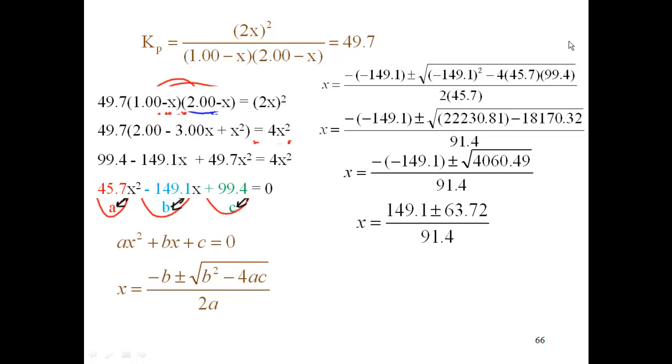Continuing on, I now get, since I've got a negative, a negative 149.1, that's a positive 149.1, plus or minus 63.72, which is what the square root of the 4,060.49 is, divided by 91.4. Now what does the plus or minus mean? Well, that means I have two answers. I'll take 149.1 plus 63.72 divided by 91.4, and I'll take 149.1 minus 63.72 divided by 91.4 and come up with two answers.